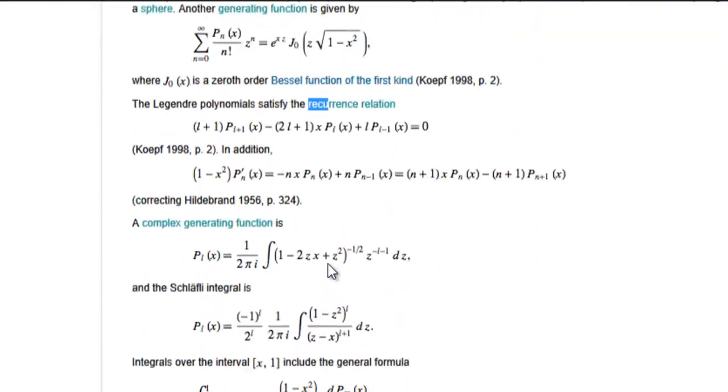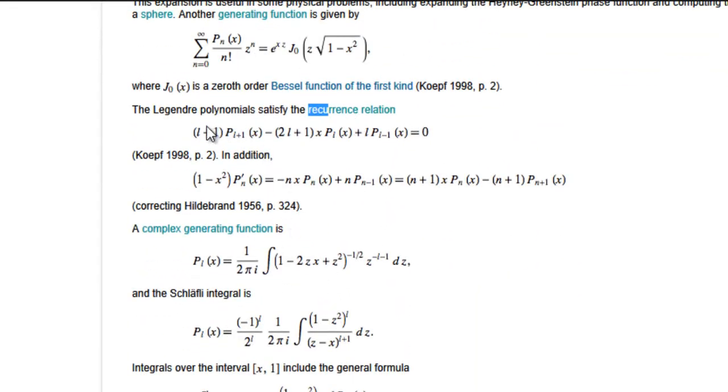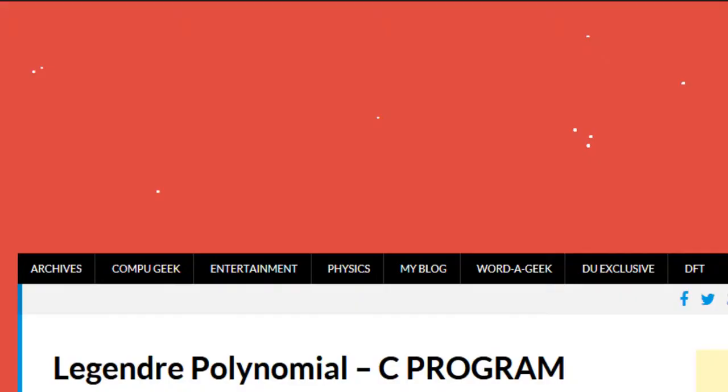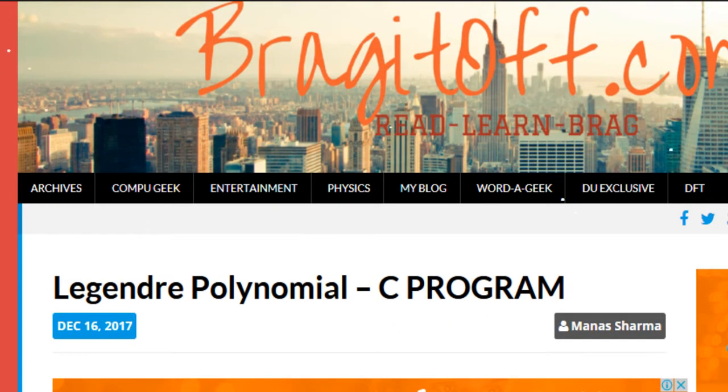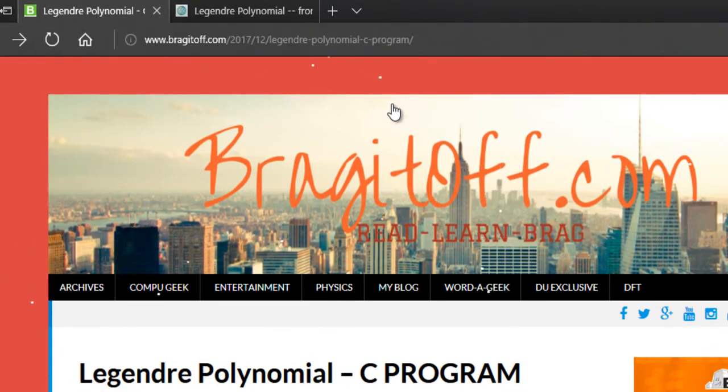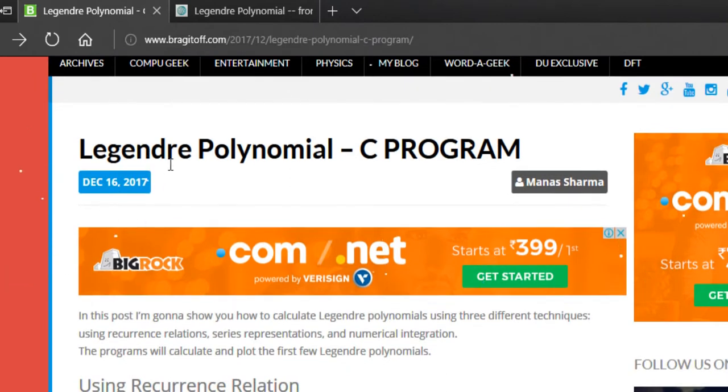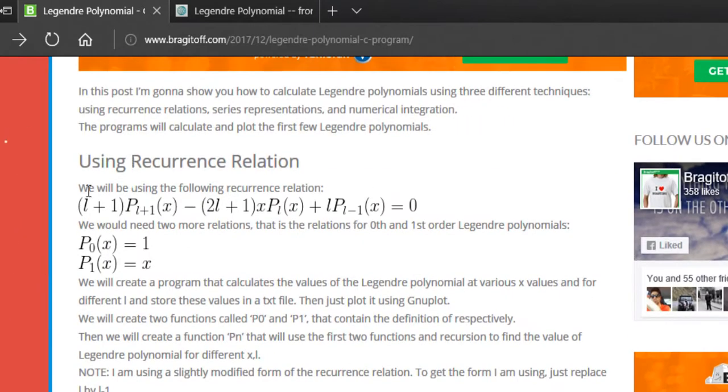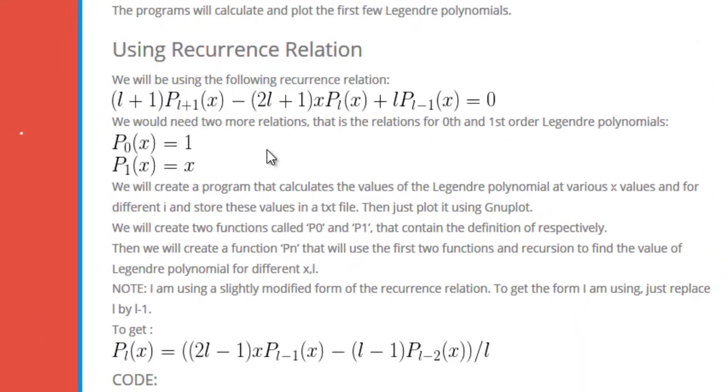Then we will be using the method of recurrence relation. Just search for recurrence relation and on this page you can find the recurrence relation. To summarize all this information, I have already written a blog post on my blog. The name of my blog is braggadoff.com, and there is a post about how to write a C program for Legendre polynomials.